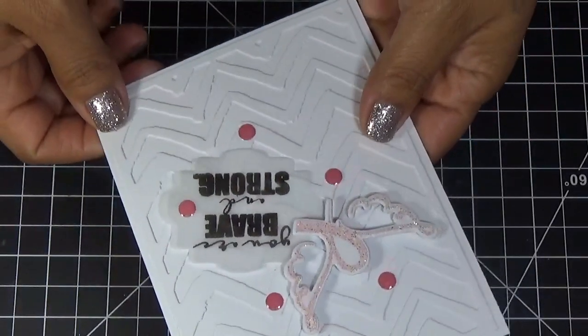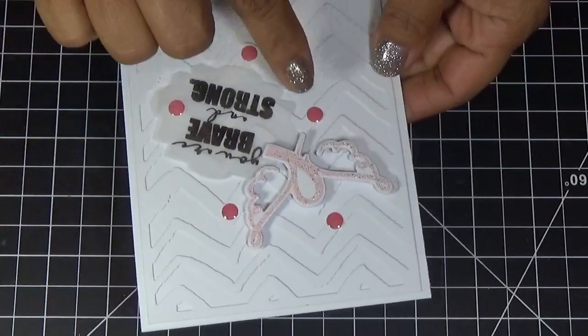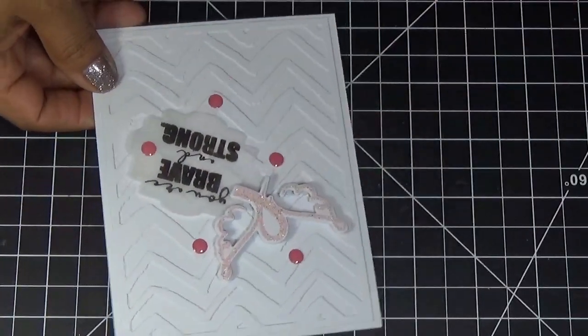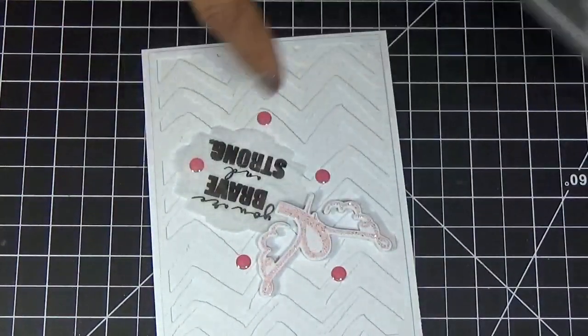And then you are brave and strong, that is one of the sentiments in this set and I went ahead and I stamped it on vellum paper and the little die I used was this one in the belly band sentiments that fit it perfectly.